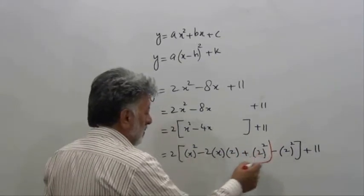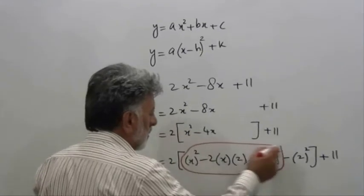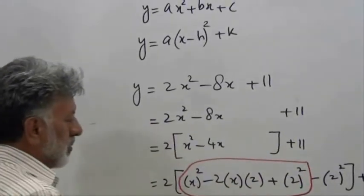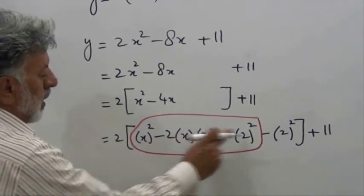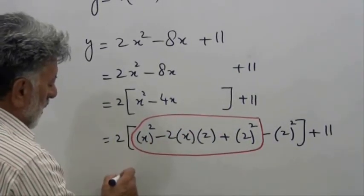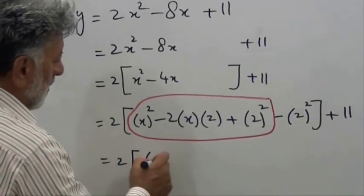Now these three terms can be reduced to (a - b) squared, and the rest of the things will come as they are.